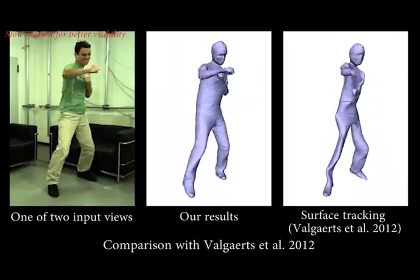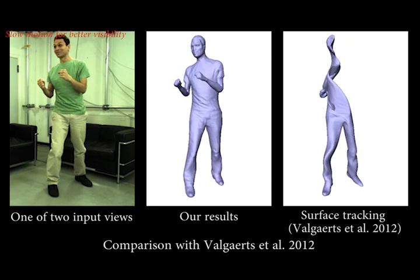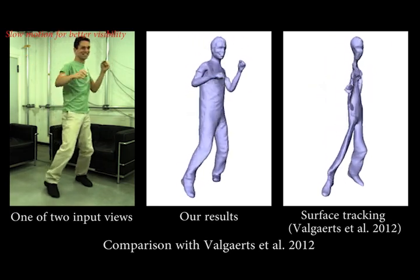We demonstrate how a binocular surface tracker, recently proposed for facial performance capture, fails on highly articulated motion.